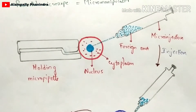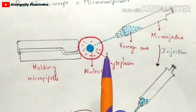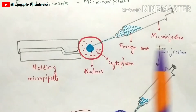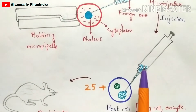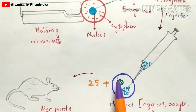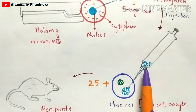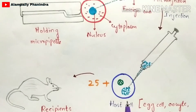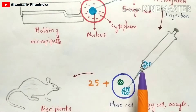So the first step is to extract the foreign DNA from the nucleus of the foreign cell. In the second step, you select a host cell and inject the total foreign DNA into that host cell.